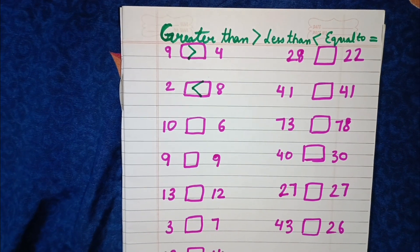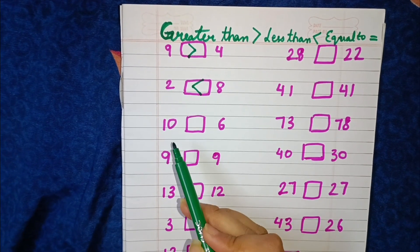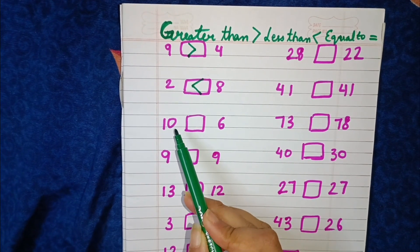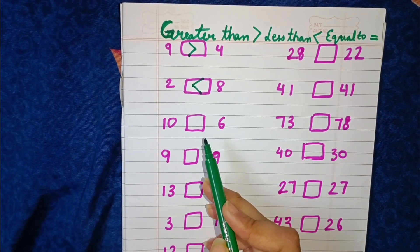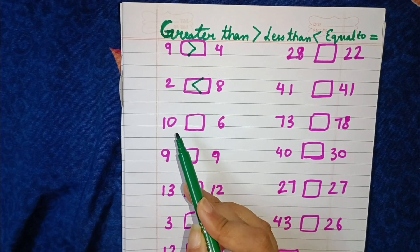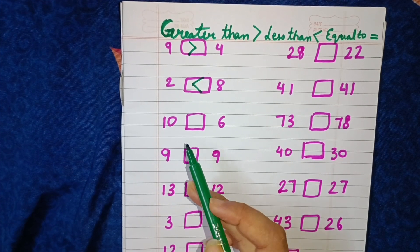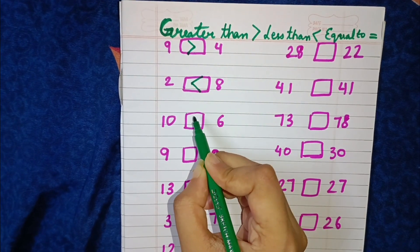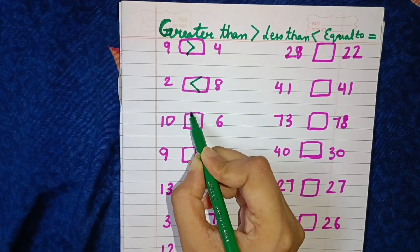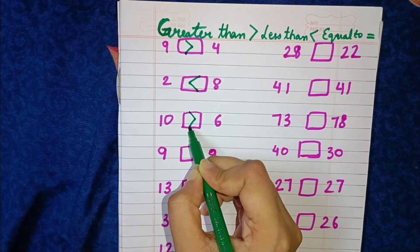Now we have the next numbers: 10 and 6. As you all know, 10 is greater than 6, so we will put here the greater than sign.